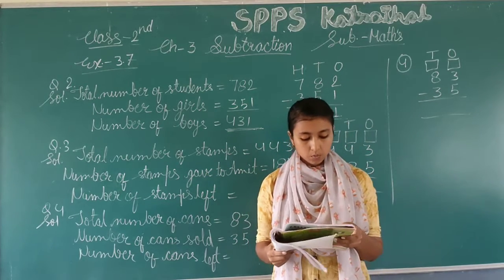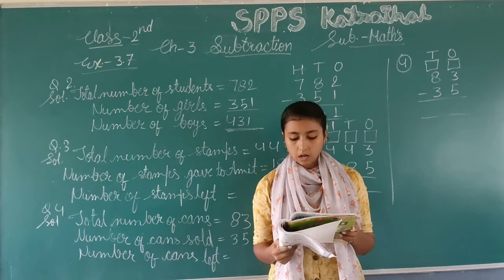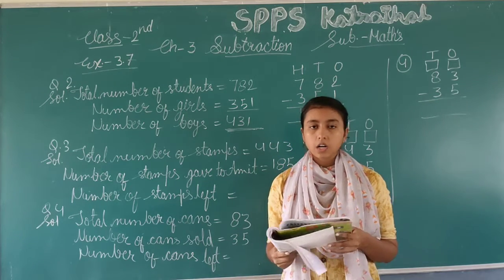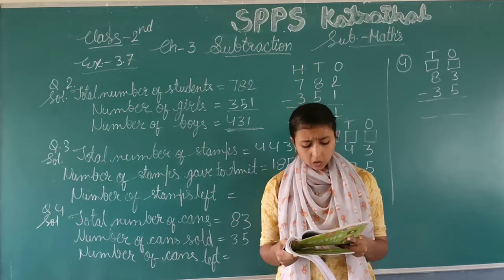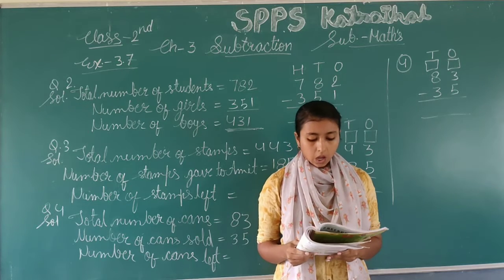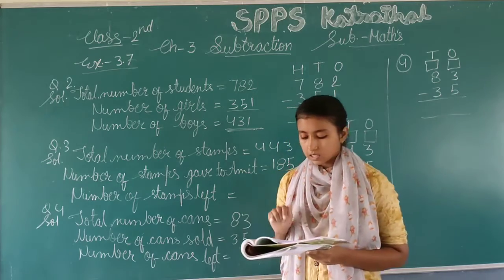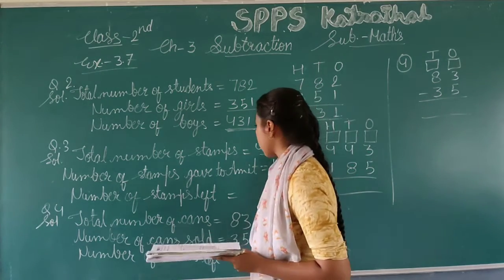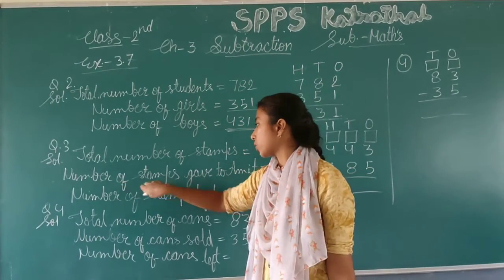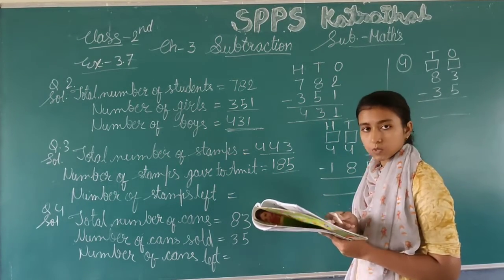Now we will do the third question. Reading from the book: Alka had 443 stamps in her collection — stamps means tickets. She gave 185 stamps to Amit. How many stamps are left with Alka? We will write the total stamps, which is 443, and subtract the stamps given to Amit, which is 185.